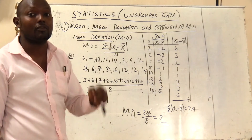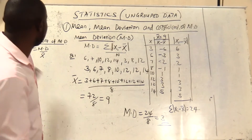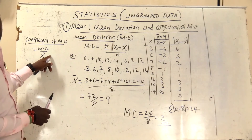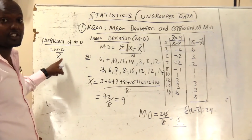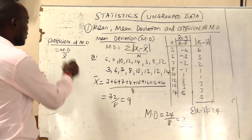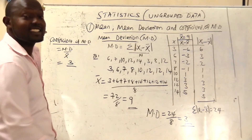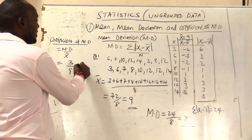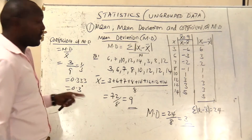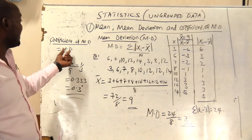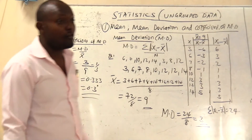Now let's look at how we calculate the coefficient of mean deviation. The coefficient of mean deviation is simply mean deviation over arithmetic mean. We calculated mean deviation and got 3, and arithmetic mean is 9. So it will be 3 over 9, which gives 1/3, or 0.333 recurring. That is how we get the coefficient of mean deviation.